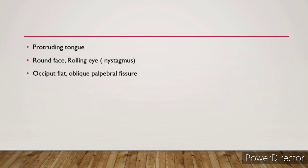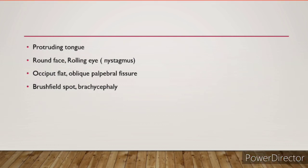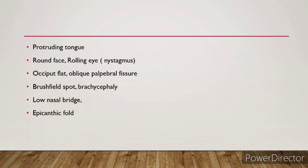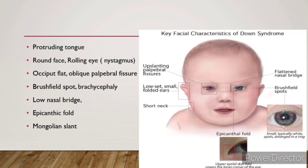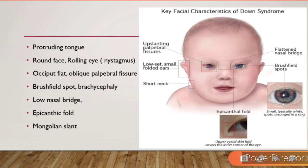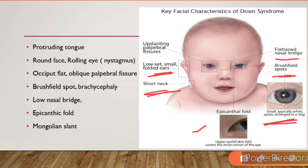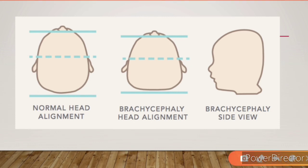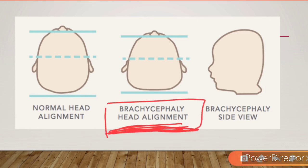Additional features include flat occiput, oblique palpebral fissure, Brushfield spots — the characteristic small white spots on the eye — and brachycephalic head, low nasal bridge, and epicanthal fold with the Mongolian slant. In the pictures you can see the flattened nasal bridge, Brushfield spots, the epicanthal fold in the inner canthus of the eye, short neck, small folded ears, upslanting palpebral fissures, and the brachycephalic head shape.